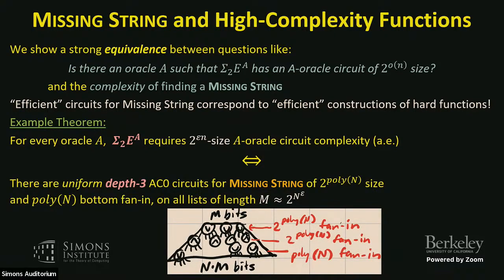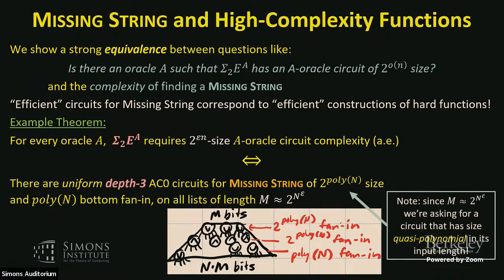In the picture: we have depth-3 circuits with ORs at top, then ANDs, with 2^{poly N} top fan-in and poly N bottom fan-in. The input is M strings of length N — so N×M bits total. The circuit outputs N bits (the missing string), and we can think of a separate circuit for each output bit. Since M ≈ 2^{epsilon n}, we're asking for a circuit quasi-polynomial in the input size. Depth 3 is crucial here — there's no size-depth tradeoff of the usual sort.